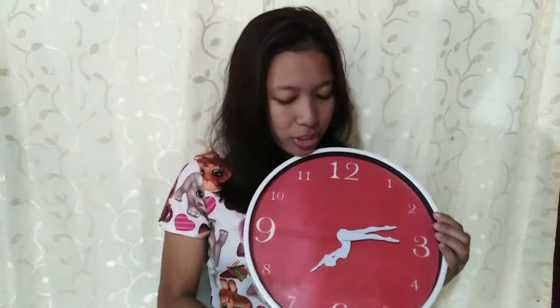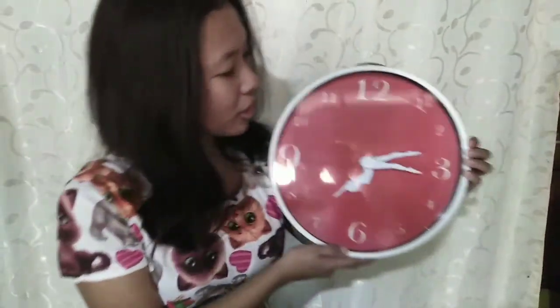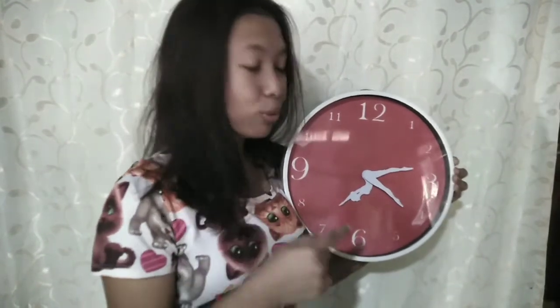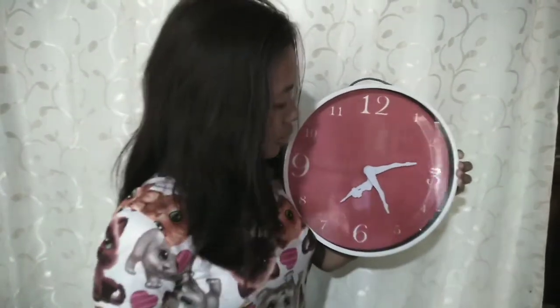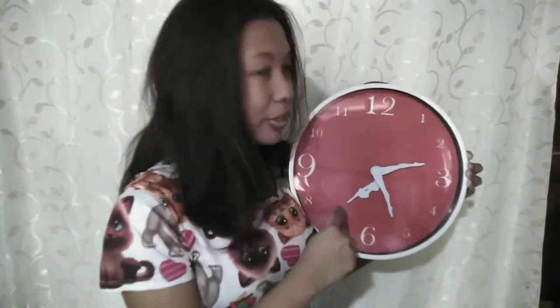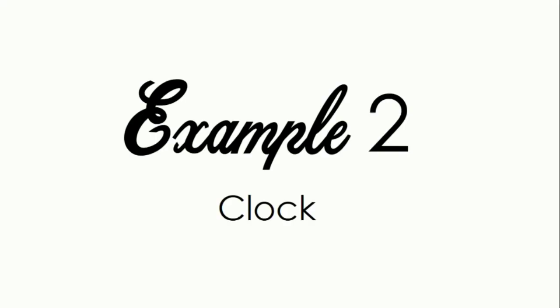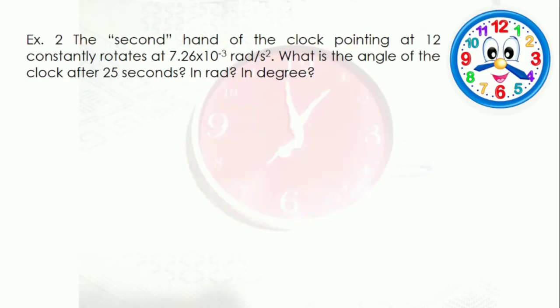Another example of rotational motion commonly found inside our homes is a clock. The hour hand points at hours, one hand is for seconds, and one is for minutes. They rotate each time the time changes.